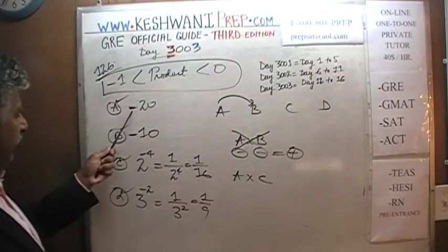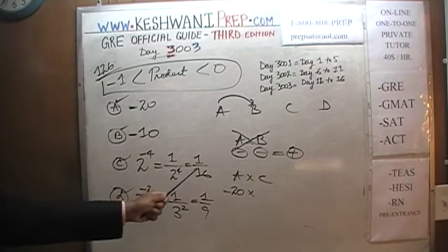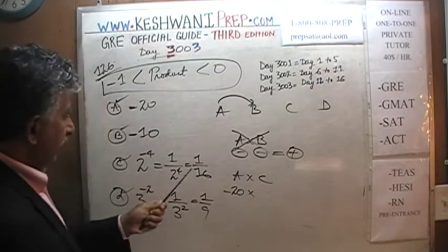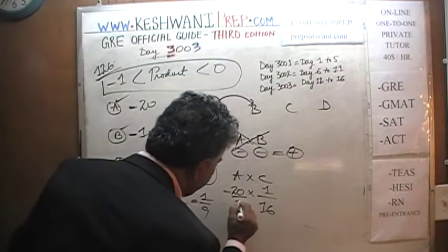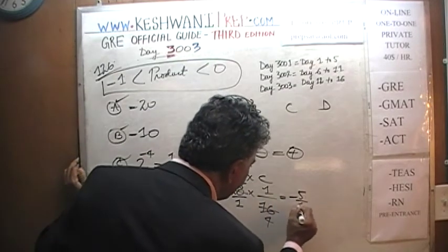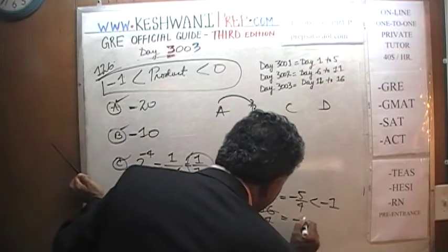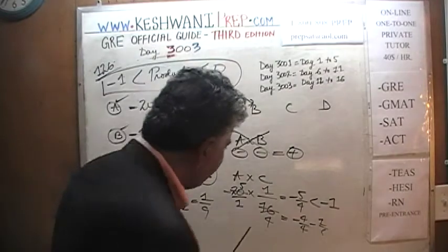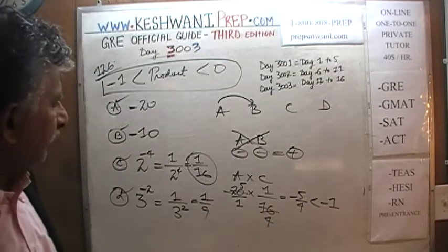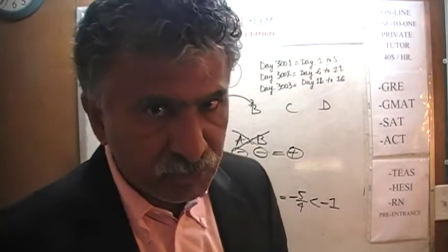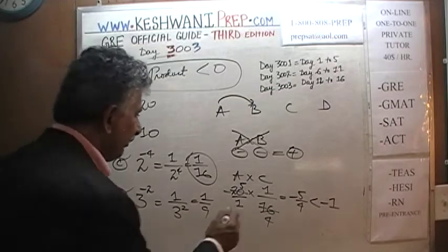A times C: A is negative 20, a negative number times a positive number. Negative 20 times 1/16: dividing top and bottom by 4 gives us negative 5/4, which is less than negative 1. That does not work. A times D: A is negative 20, D is 1/9. We end up with negative 20/9, which is also less than negative 2. A times D also does not work.